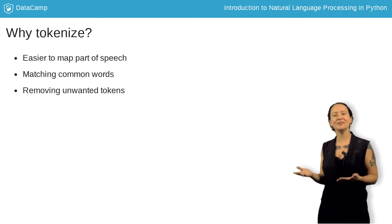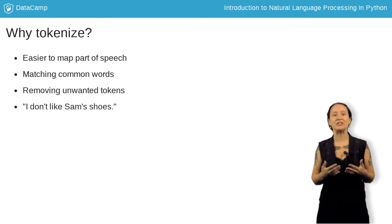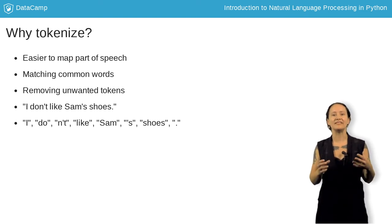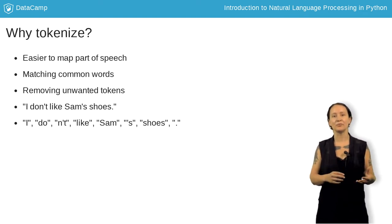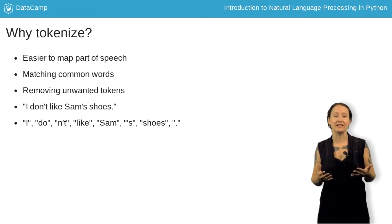Here we have a good example. The sentence is: "I don't like Sam's shoes." When we tokenize it, we can clearly see the negation in the "not", and we can see possession with the apostrophe s. These indicators can help us determine meaning from simple text.